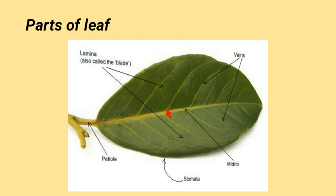This is called the midrib, and these are veins. Midrib and veins contain vascular tissues like xylem and phloem. Xylem transports water and minerals, whereas phloem transports sugar.